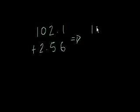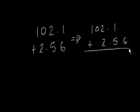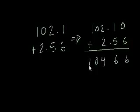So first thing, we line up the decimal points. 102.1 plus, line up the decimal points, 2.56. Now we can add a trailing 0 here, and we're ready to add. 0 plus 6 is 6. 1 plus 5 is 6. 2 plus 2 is 4. 0 plus nothing is 0. 1 plus nothing is 1. Bring down that decimal point. 104.66.